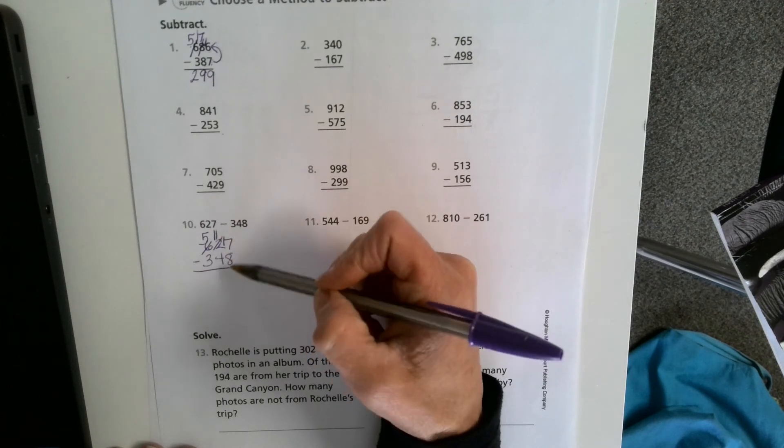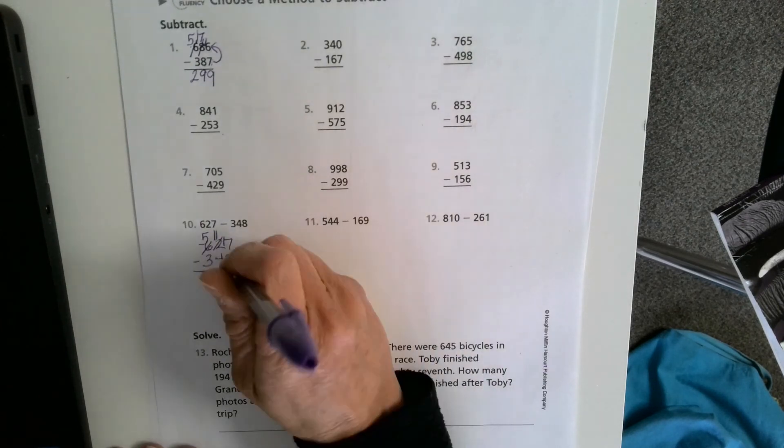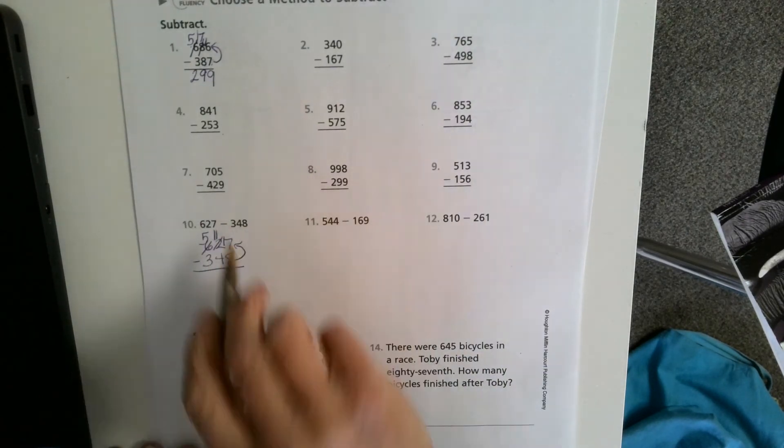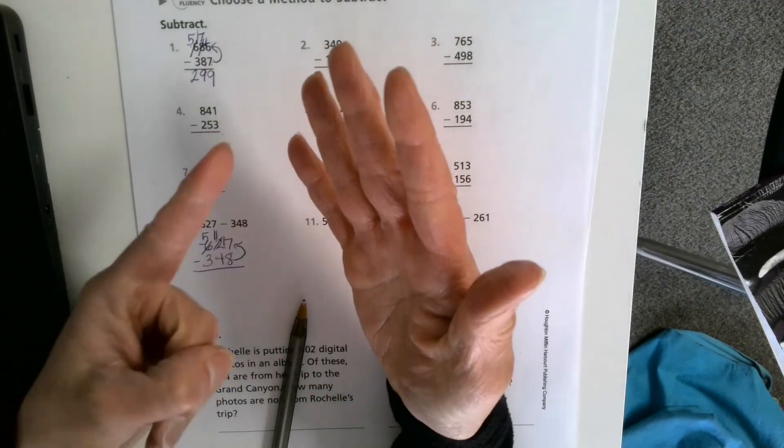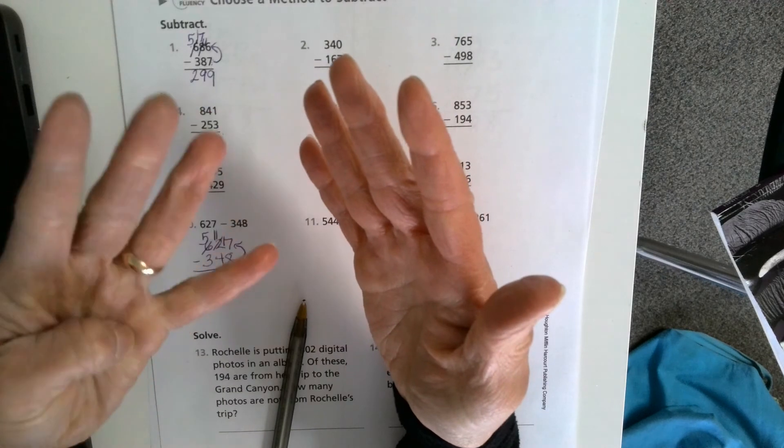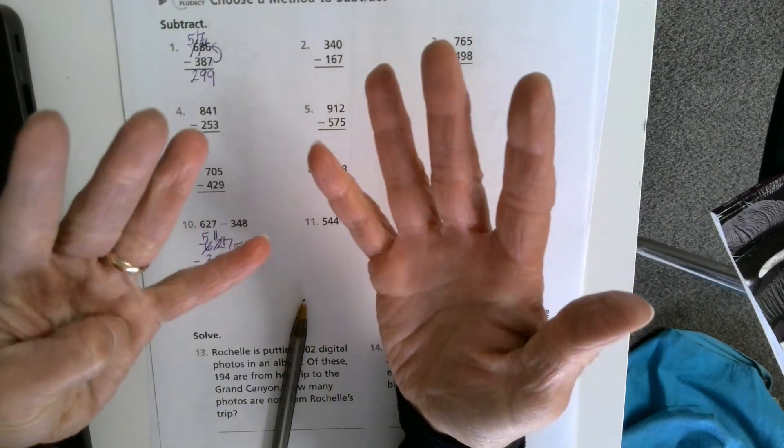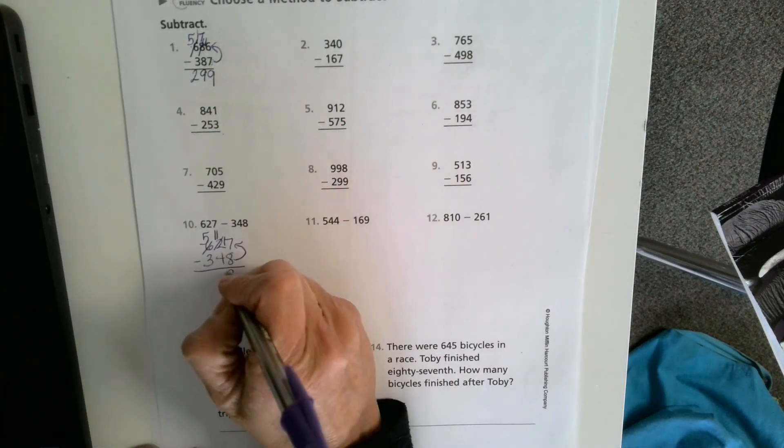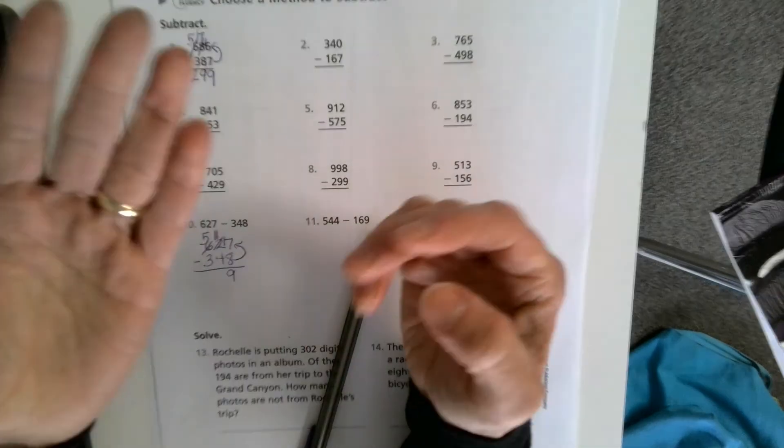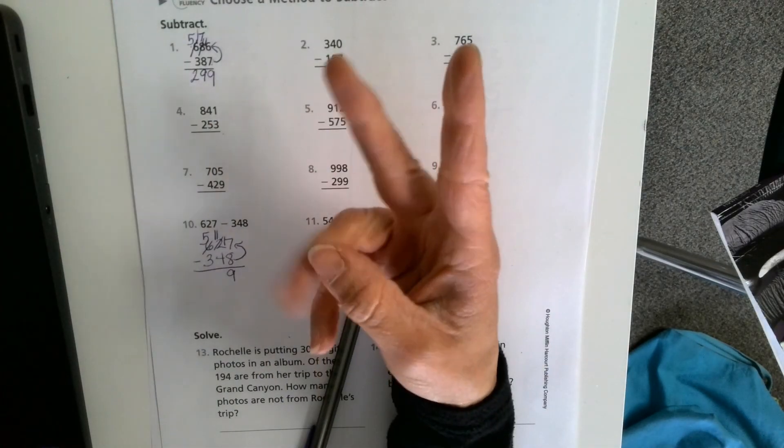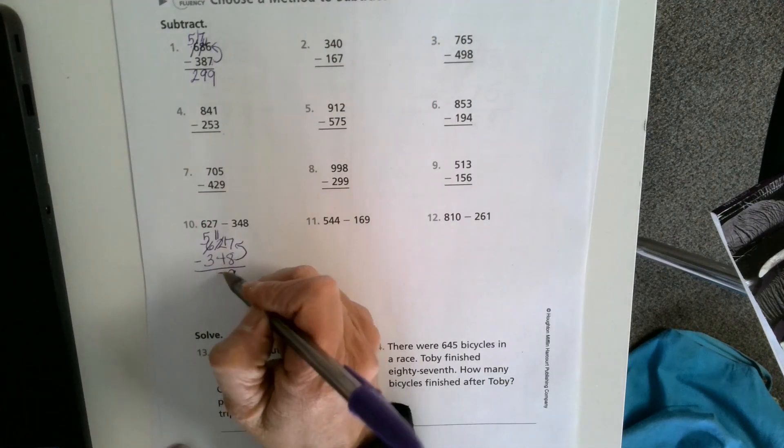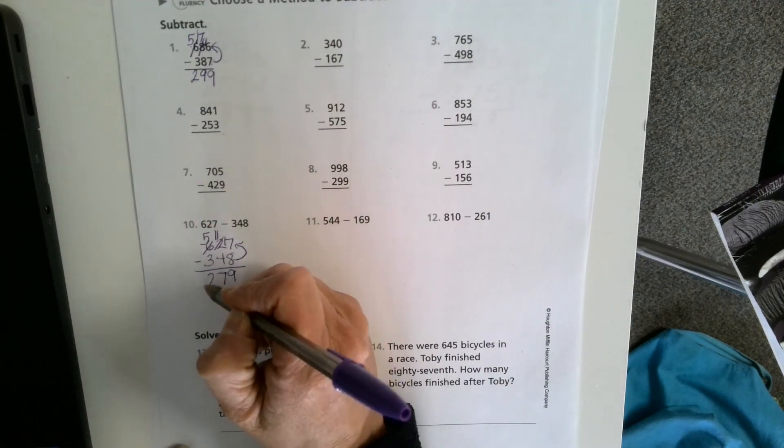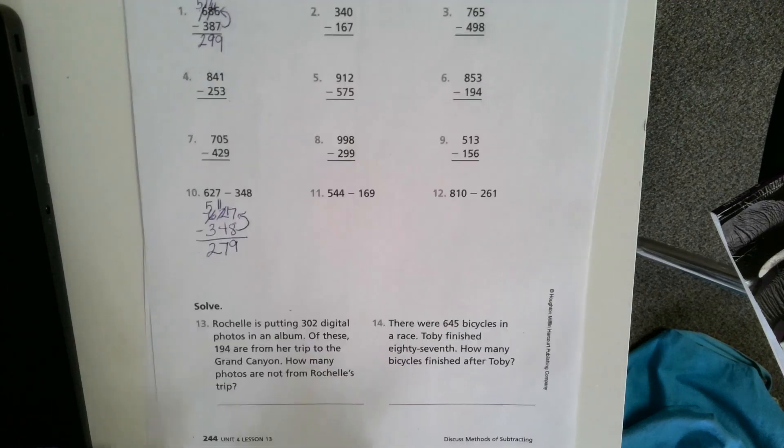Now I can subtract from any direction. I think I'll subtract from the ones place. 17 minus 8. 8 in my head. 9, 10, 11, 12, 13, 14, 15, 16, 17. I got 9. 11 minus 4. 4 in my head. 5, 6, 7, 8, 9, 10, 11. I see 7. And then 5 minus 3 is 2.